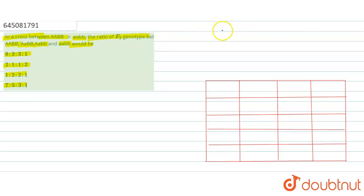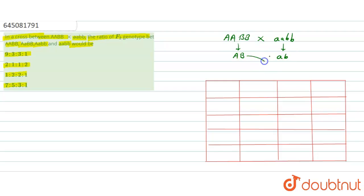If we make a cross between AABB crossed with aabb, the gametes will be AB and ab. In the F1 generation, all offspring will be AaBb — that means all are heterozygous. So this is the F1 generation.